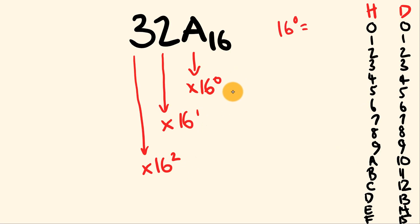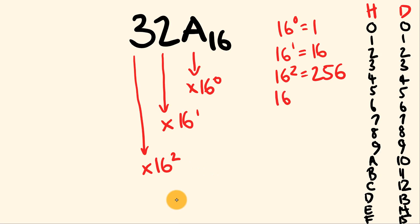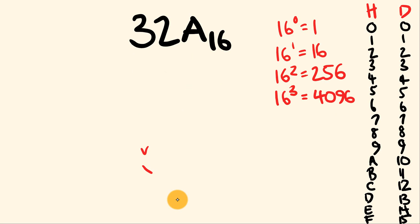It's worth jotting down what these different powers equal. 16 to the power of 0 is equal to 1. 16 to the power of 1 is equal to 16. 16 squared — 16 times 16 — is equal to 256. And for our four-digit example later, 16 to the power of 3 equals 16 times 16 times 16, which is equal to 4096.